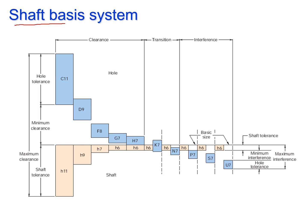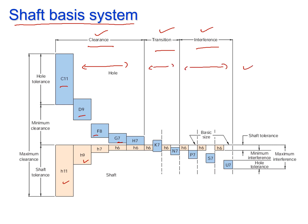We also have a similar diagram for the shaft basis system. Now the shaft tolerance is constant and the hole tolerances are changing. Again, the three regions of fits are defined: clearance fits, transition fits, and interference fits. Ranges are given according to which we can select any combination for our design.